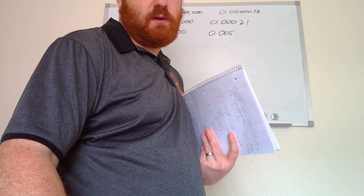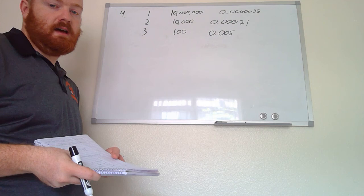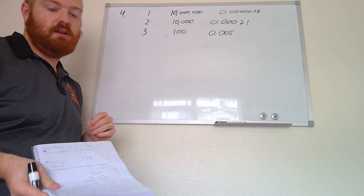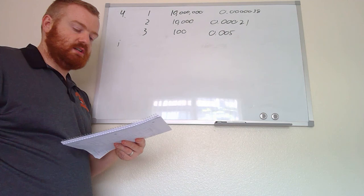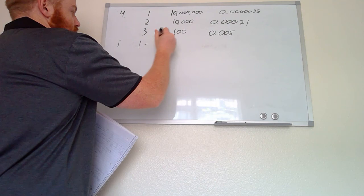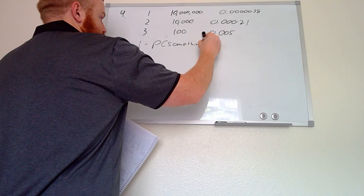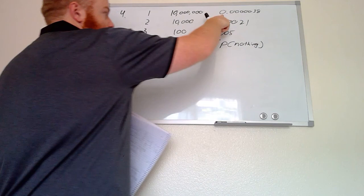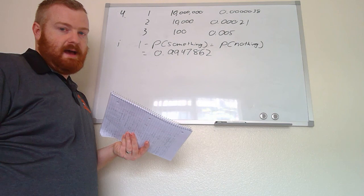For question number four, we're looking at a lottery with three outcomes — grand prize, second place, and third place — with associated payouts and probabilities. For part one, the probability of winning nothing means not placing first, second, or third. We add together the probabilities of winning something and subtract from 1 (representing 100%). So: 1 minus the probability of first, minus second, minus third gives us approximately 0.9947862 — about a 99.5% chance of winning nothing.